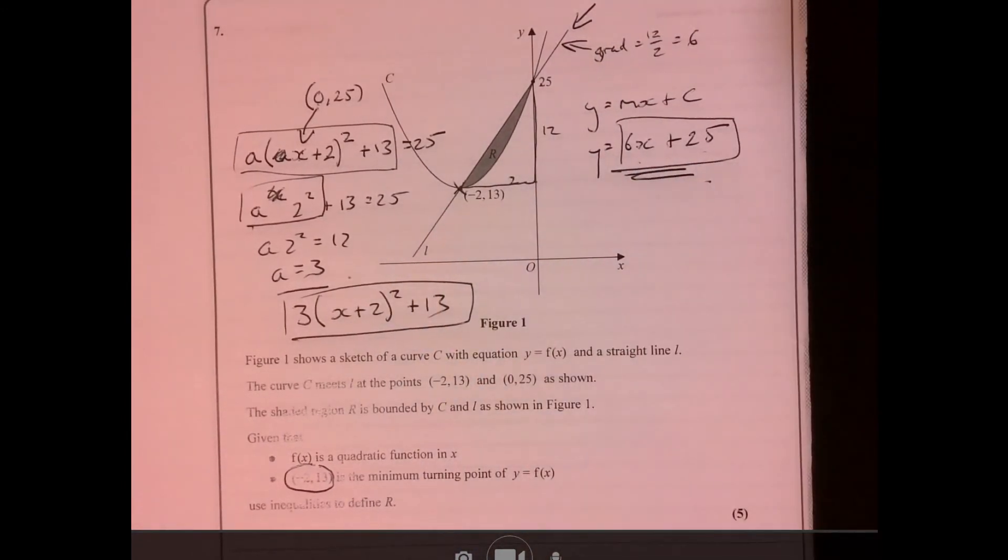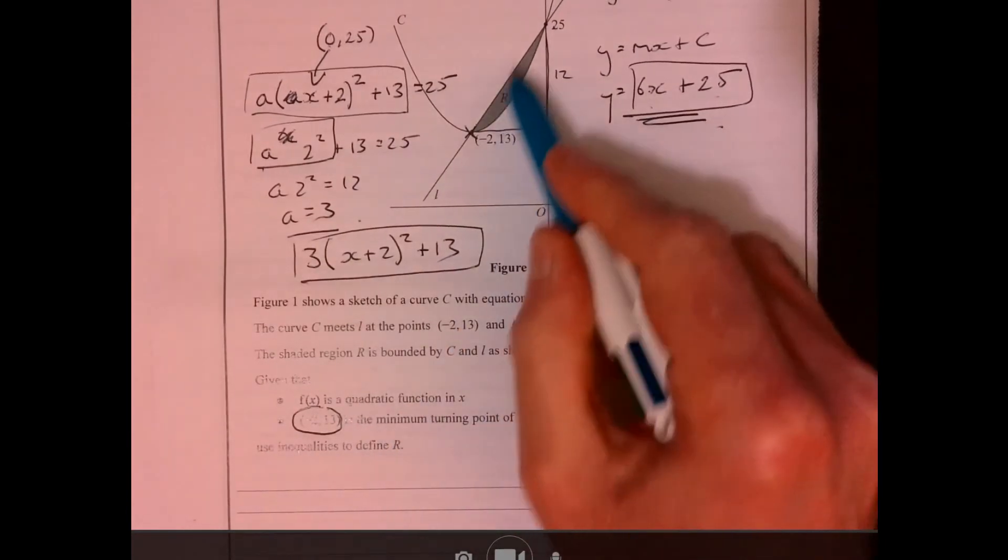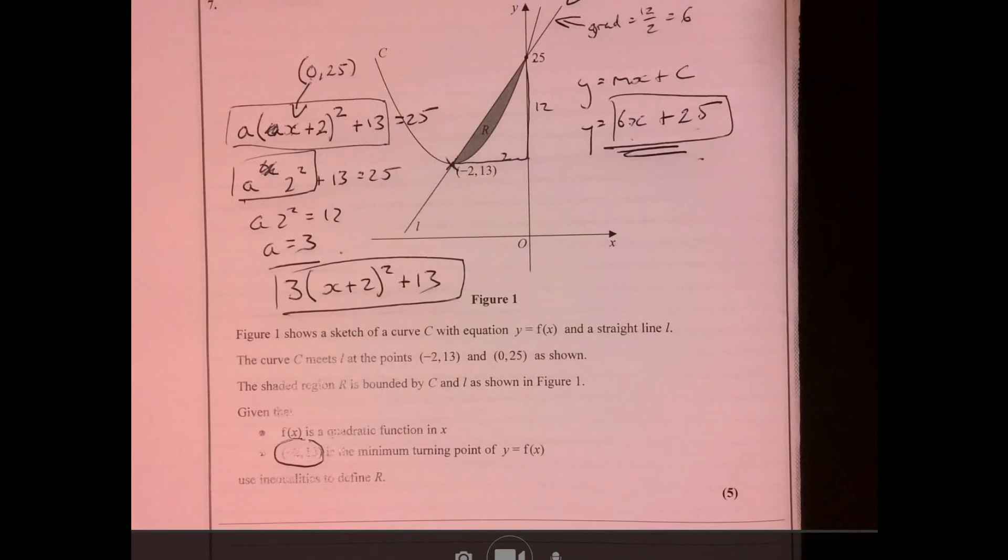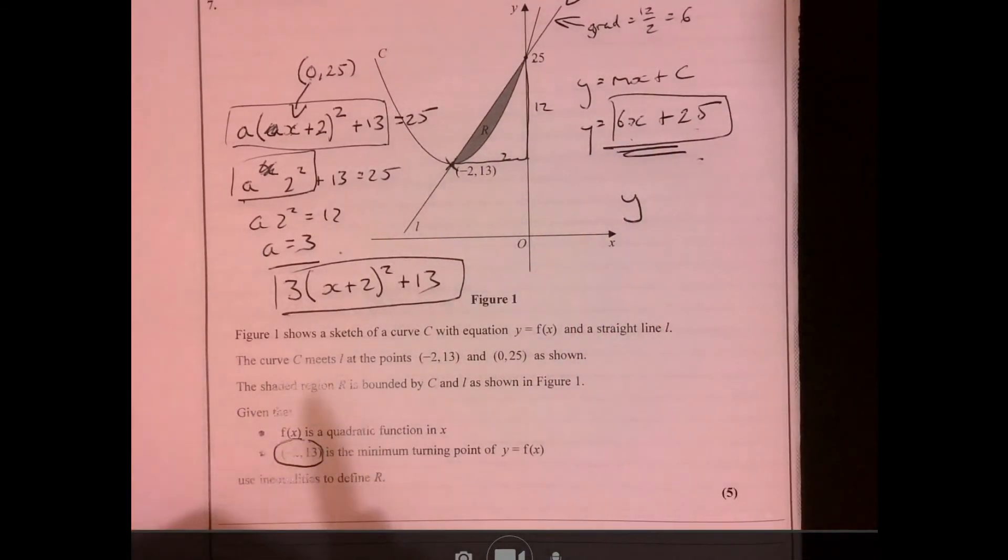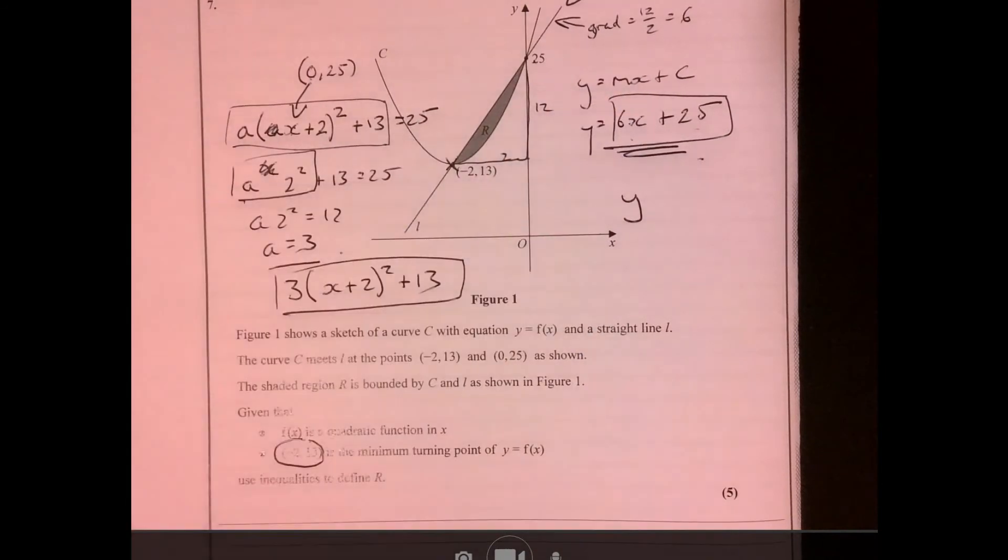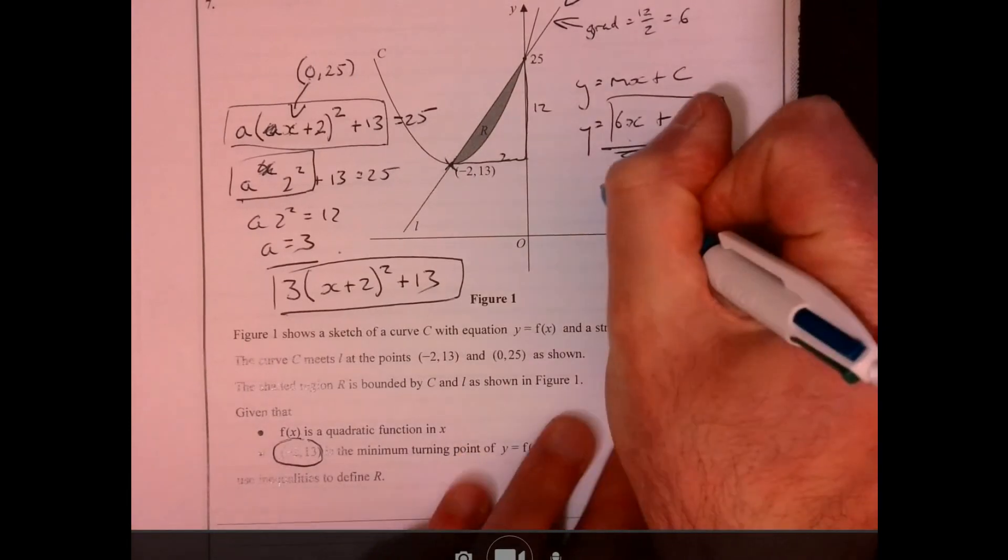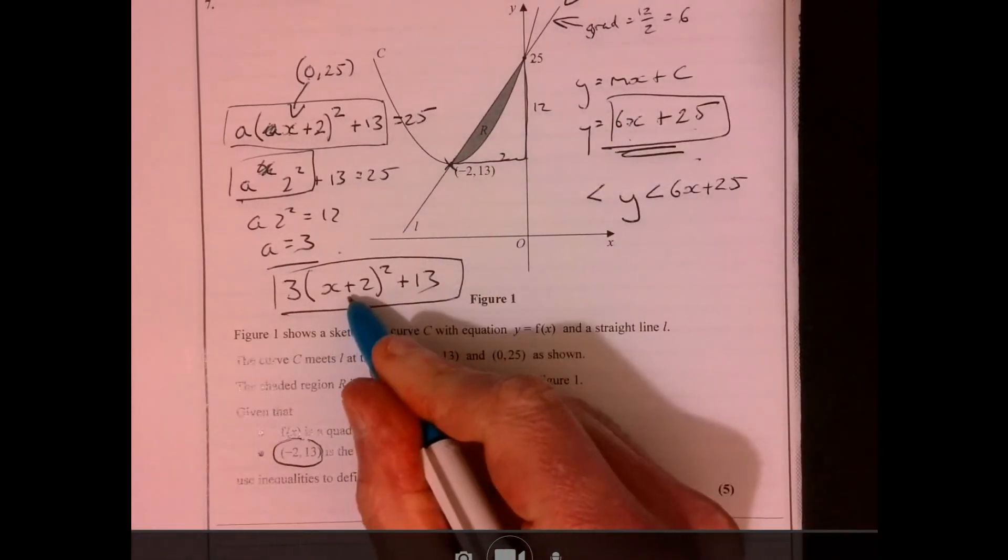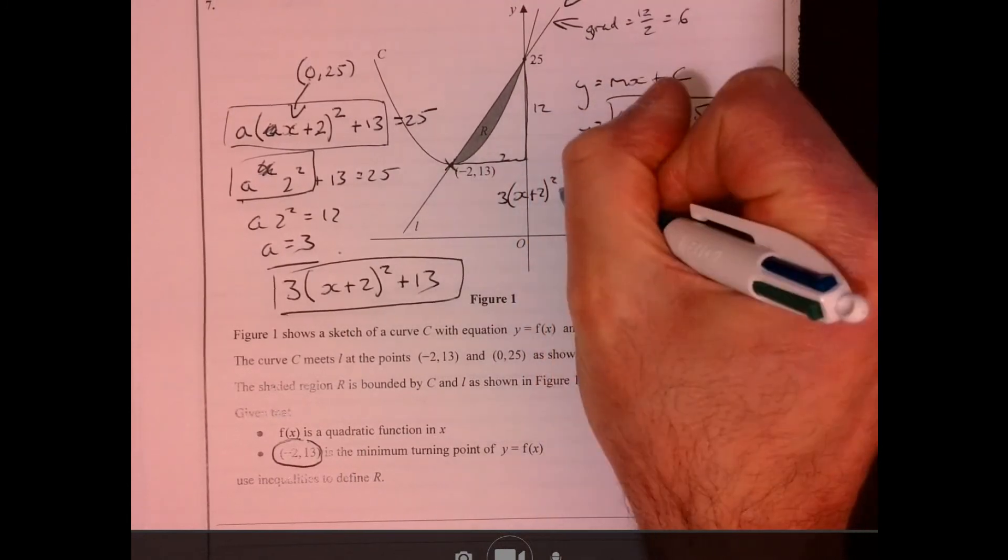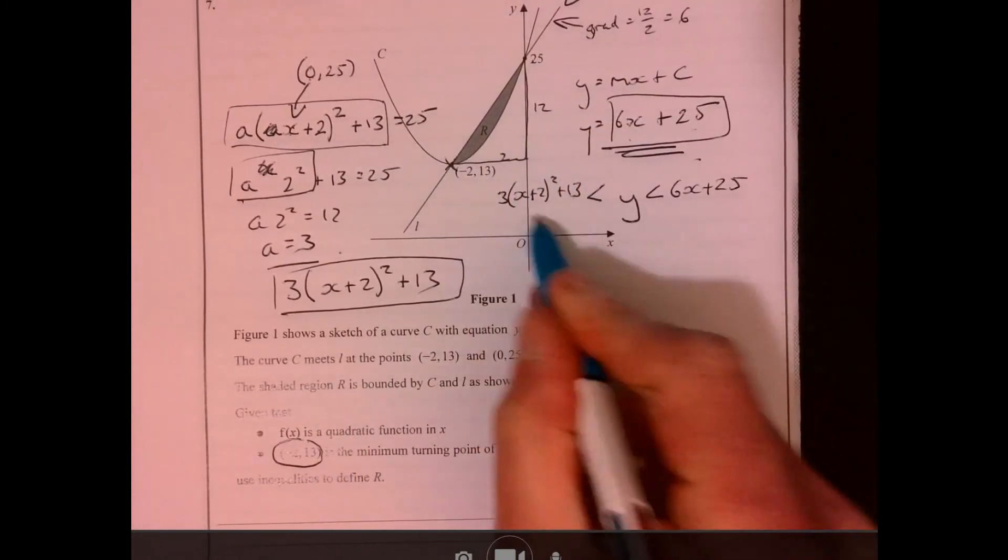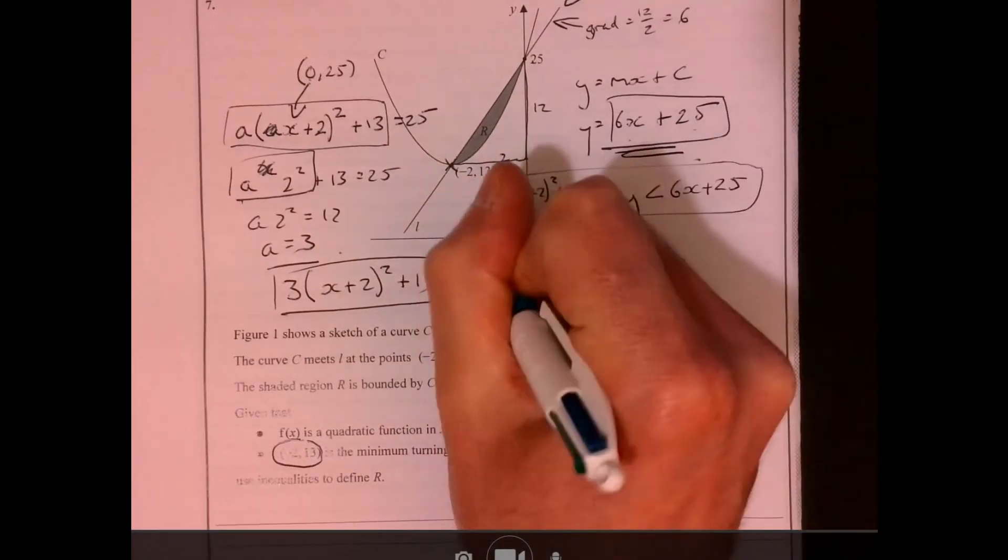Now the question actually asked us to define this region here using inequalities. So all it wants us to do here is to write down, well, it's less than the linear part, isn't it? So it's y less than 6x plus 25 and it's more than this part just here, y greater than 3(x plus 2)² plus 13. You can multiply out that part if you wanted to, but that'd be fine just like that.